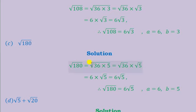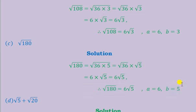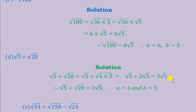Let's look at part c. Root 180 can be expressed as the square root of 36 times 5, which is the same as root 36 times root 5. The square root of 36 is 6, and since 5 is a non-square number we leave it in the square root sign. This gives us 6 root 5. So we conclude that root 180 equals 6 root 5, where a equals 6 and b equals 5.